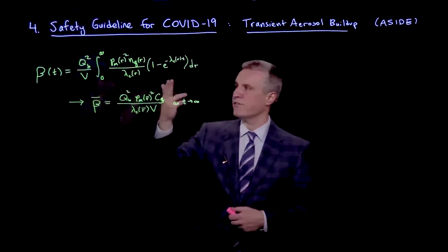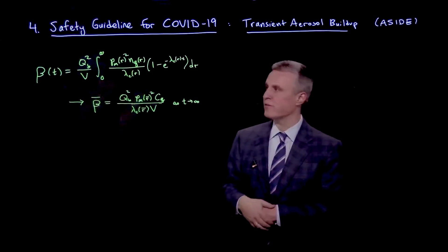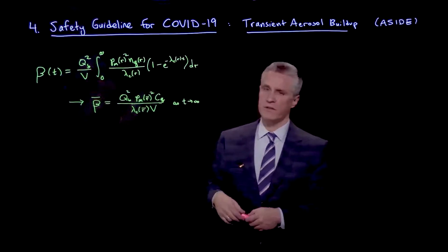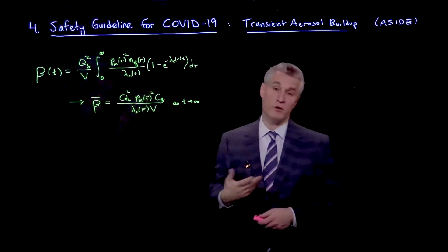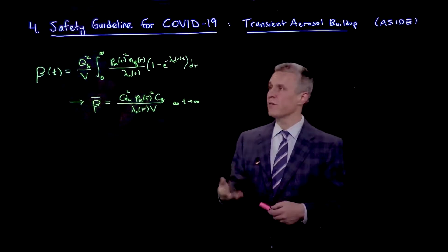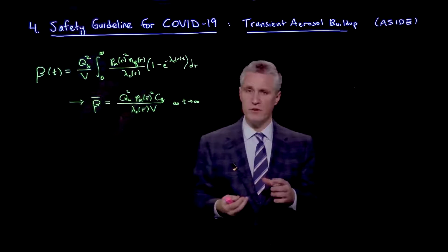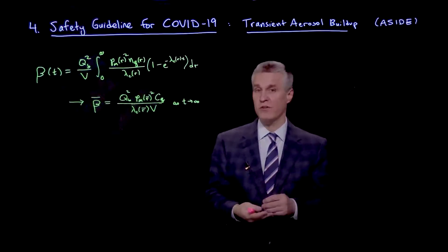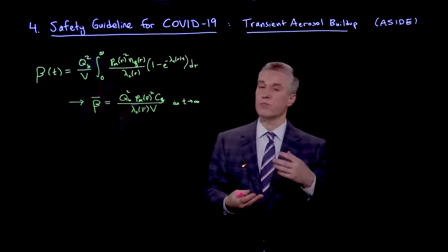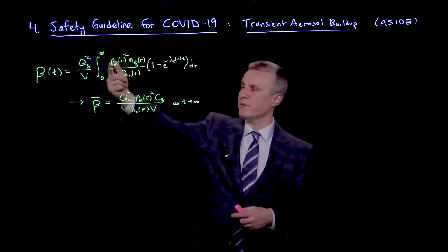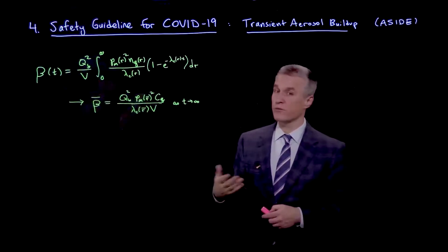Here is the general expression for the transmission rate that we describe, which depends on the breathing rate squared, the volume of the room. It's an integral over all the different drop sizes, where nq is a lumped distribution of the number of infection quanta per volume per radius.